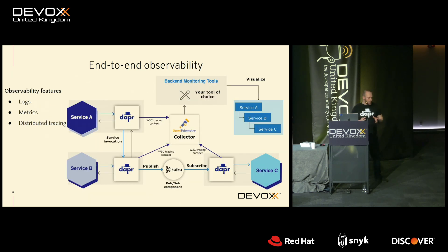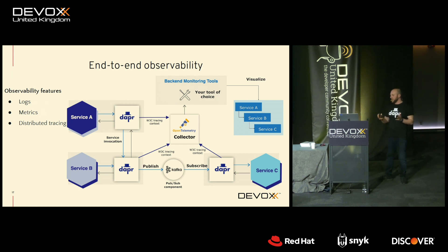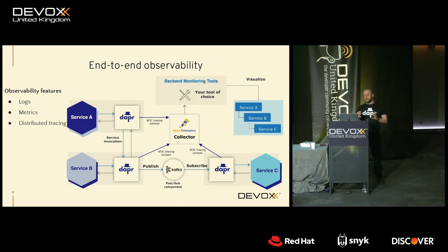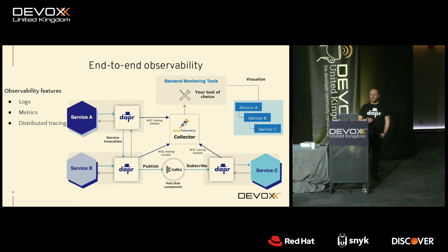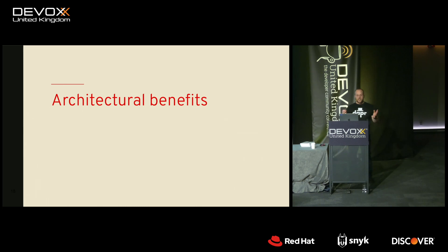For observability, with DAPR you get logging, metrics, and distributed tracing without adding any libraries in your application. When enabled, DAPR logs all interactions with the sidecar, exposes Prometheus-based metrics, and propagates distributed traces — all without requiring any libraries in your application.